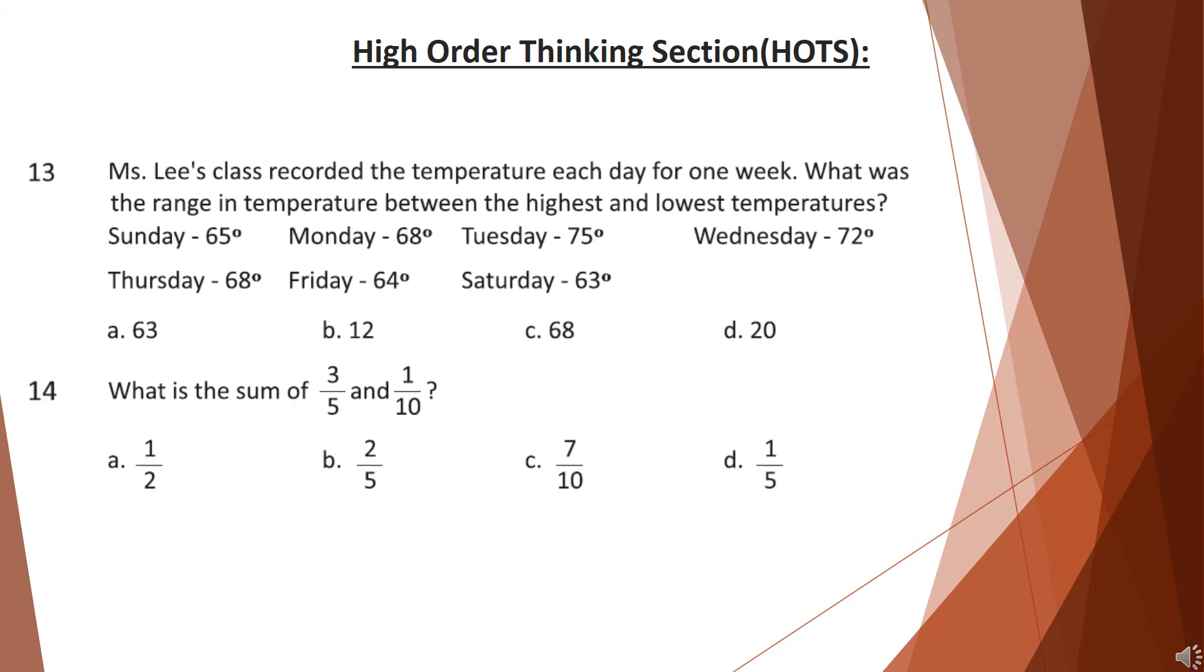What was the range in temperature between the highest and lowest temperatures? Sunday 65 degrees, Monday 68 degrees, Tuesday 75 degrees, Wednesday 72 degrees, Thursday 68 degrees, Friday 64 degrees, Saturday 63 degrees. Look at the options and choose your answer.